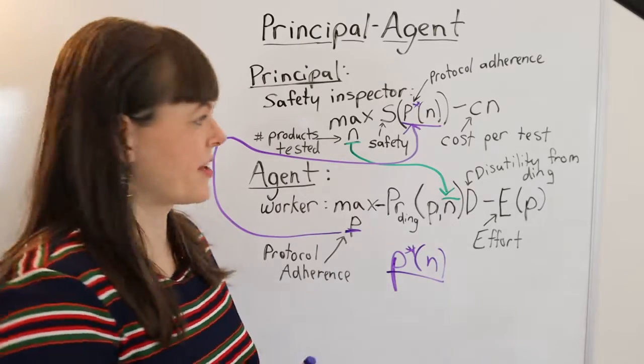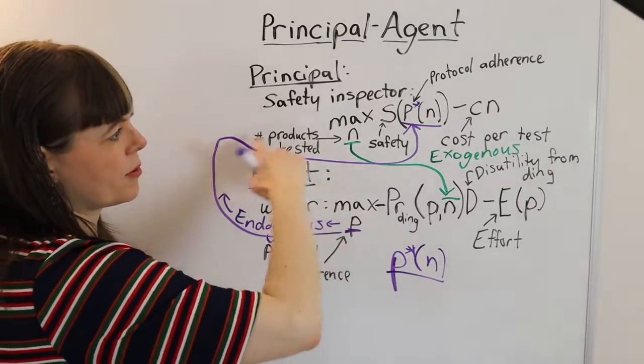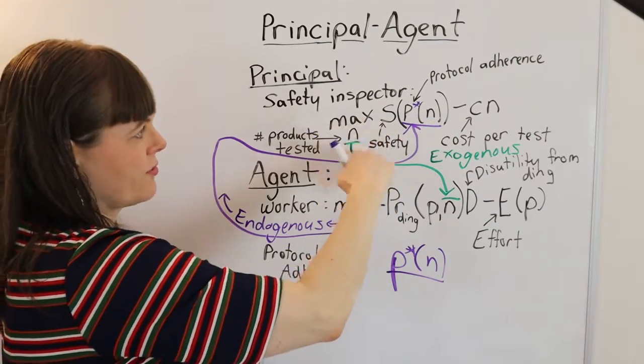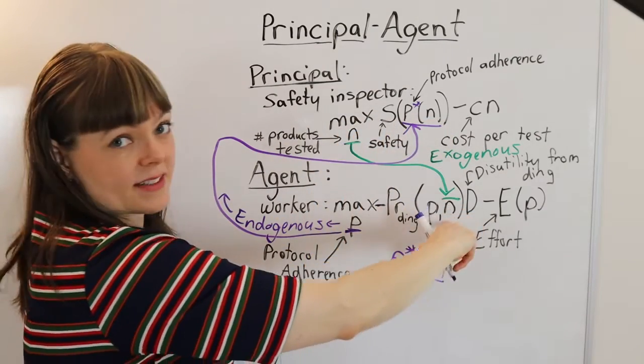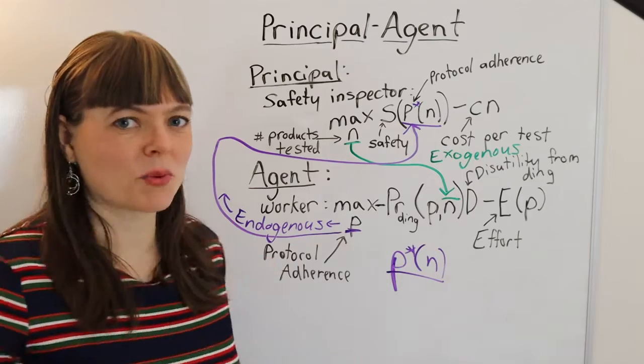So once again, let's label this. So choice variable in the agent's problem, endogenous up here. Choice variable in the principal's problem, exogenous down here. Let's do one more example.